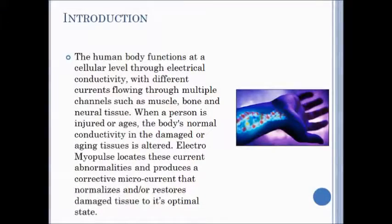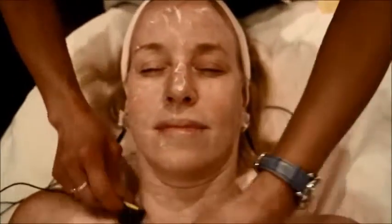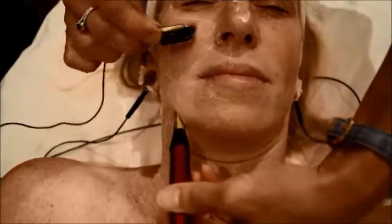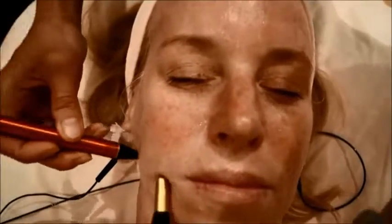The human body functions at a cellular level through electrical conductivity, with different currents flowing through multiple channels, such as muscle, bone, and neural tissue. When a person is injured or ages, the body's normal conductivity in the damaged or aging tissue is altered.